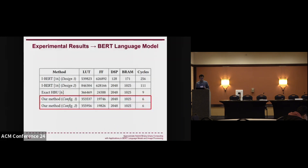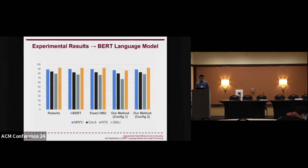Here you can see the hardware cost of different methods. IBERT is an integer-only implementation of BERT. Comparing ExactHPU and our two configurations at the same area, our methods reduce the number of cycles needed to generate the output. For accuracy, the y-axis is the percentage accuracy, with different benchmark colors and methods on the x-axis — including Roberta, IBERT, ExactHPU, and our method. Roberta is a floating-point implementation. The second configuration has competitive results compared to exact implementations, and we also observed that in QNLI it can even increase accuracy.